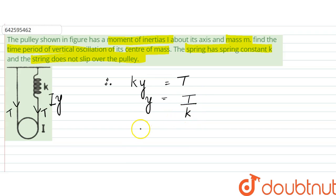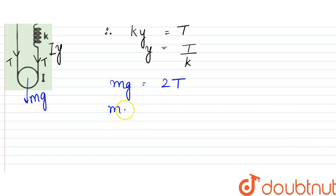Now from here we can write that there is a force mg. So mg should be equal to 2T so that it balances out. Now from here when we substitute the value of T, mg should be equal to 2ky, or y should be equal to mg by 2k. Let this be the first equation.